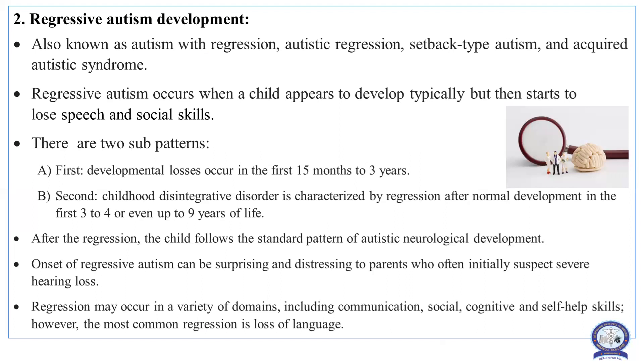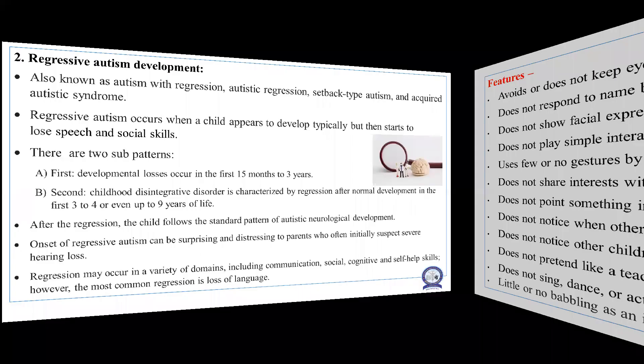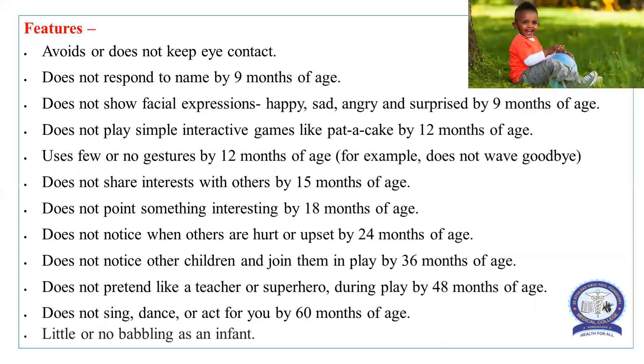The onset of regressive autism can be surprising and distressing to parents, who often initially suspect severe hearing loss in the child. Regression may occur in a variety of domains, including communication, social, cognitive, and self-help skills.